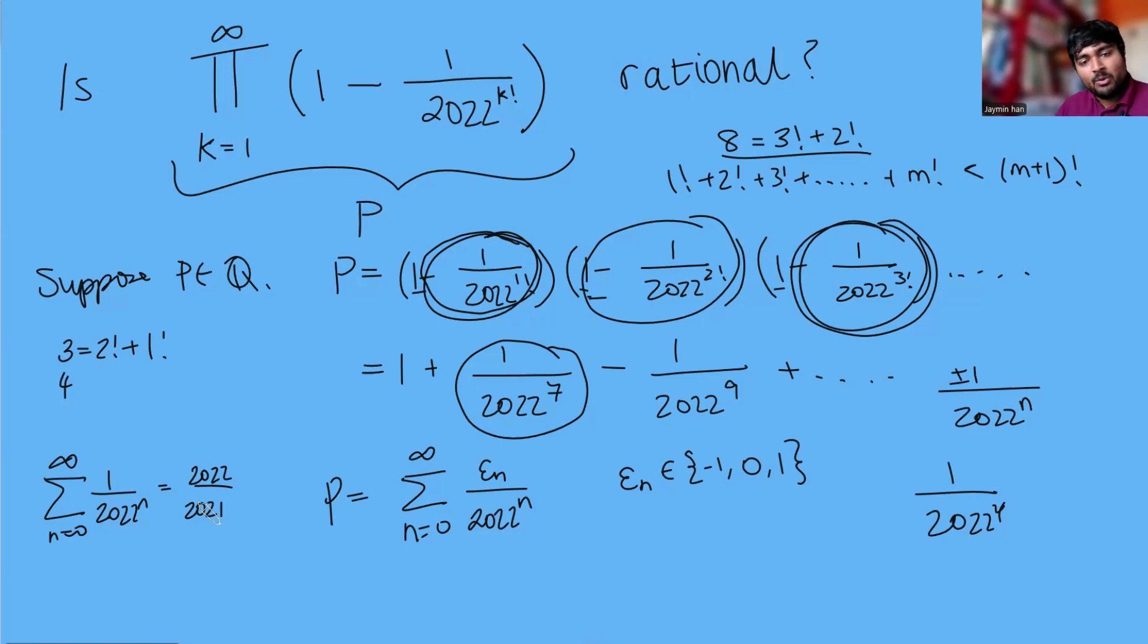Why is this at all relevant? What we're going to do is add both sides of these equations together. So we're going to get P plus 2022 over 2021 equals the sum from n equals 0 to infinity, I'm going to add this to this and so I'm just going to call that delta n over 2022 to the n where each delta n is just one more than these numbers here so it'll need to be 0, 1 or 2 because we've added this 1 here.